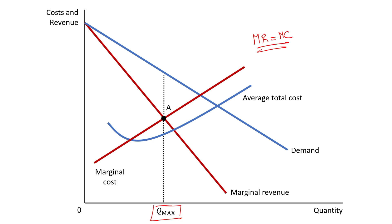If I want to find out the profit maximizing price, I will extend this line and it cuts the demand curve here, because the demand curve will tell me the profit maximizing price. So this is the monopoly price — the profit maximizing price is found at Point B.